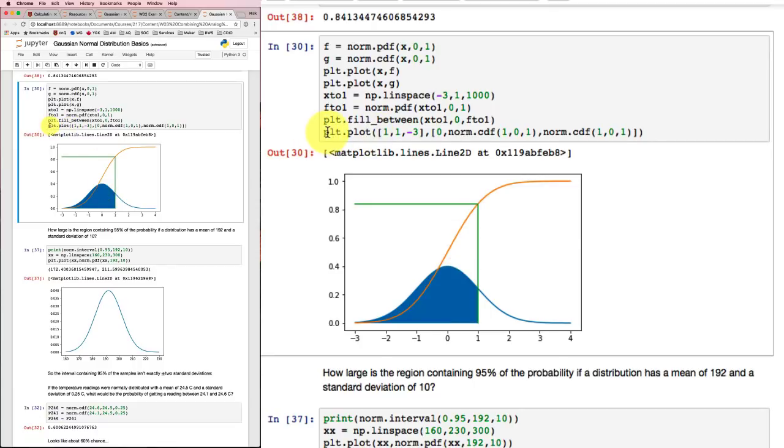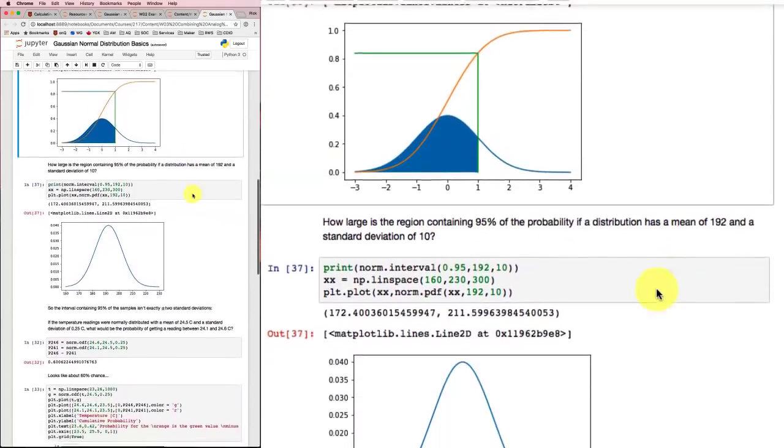I've also done a plot here with these X values, 1, 1, and negative 3. And these Y values, 0, the CDF value, and the CDF value again, just to put this green line on here so that I could show it to you. So this shows you a little bit more about what you can do with plotting. Now there are other kinds of questions we could ask.